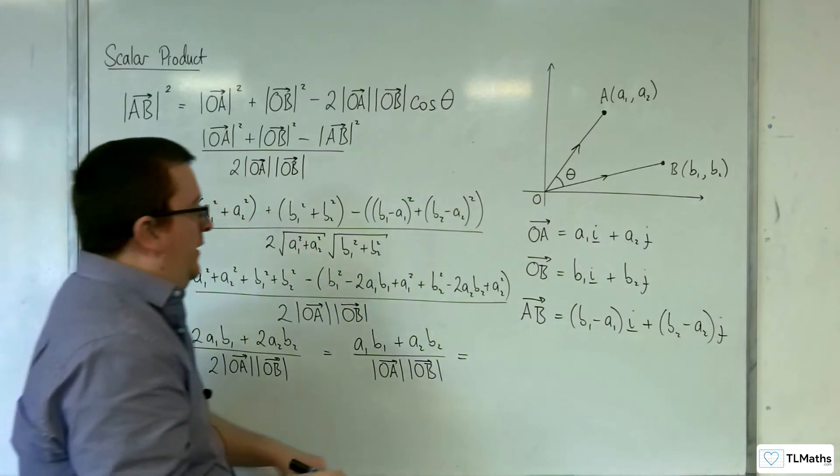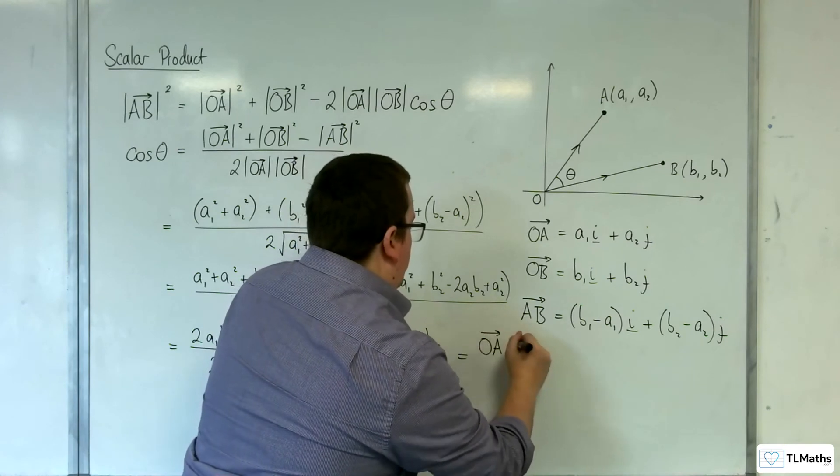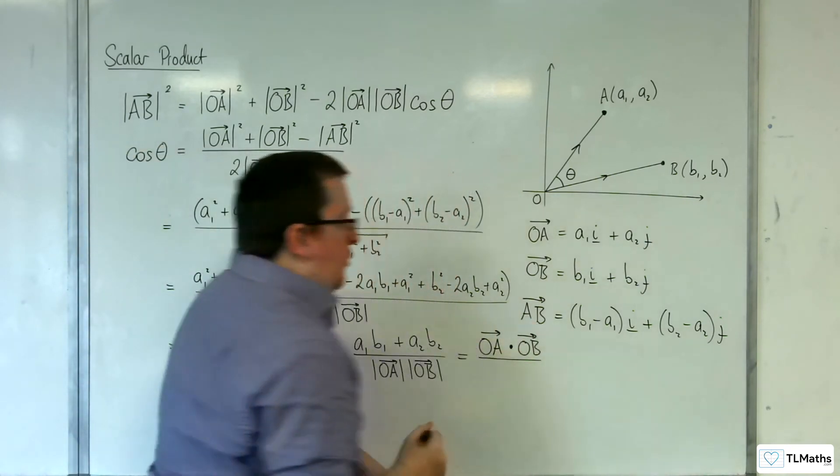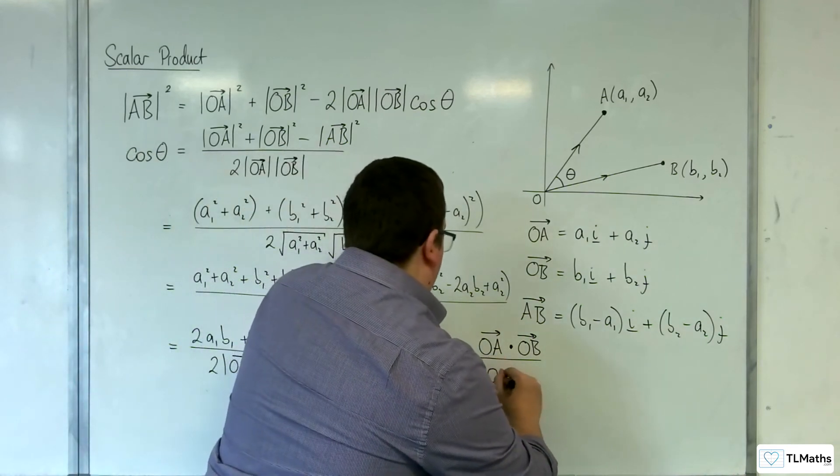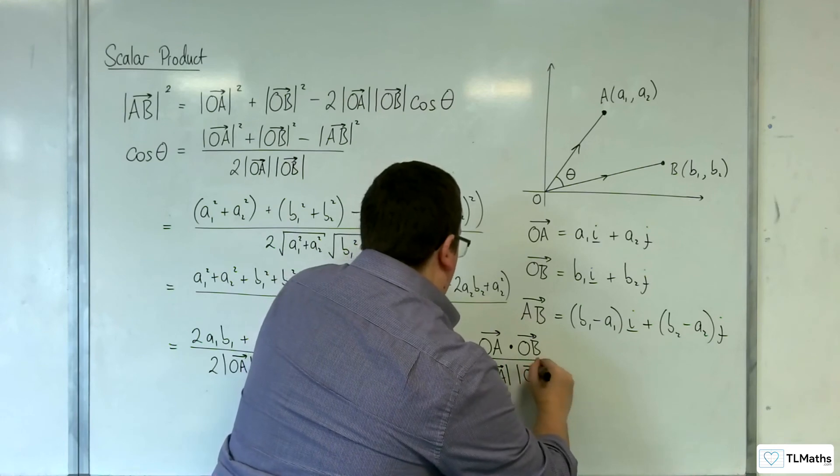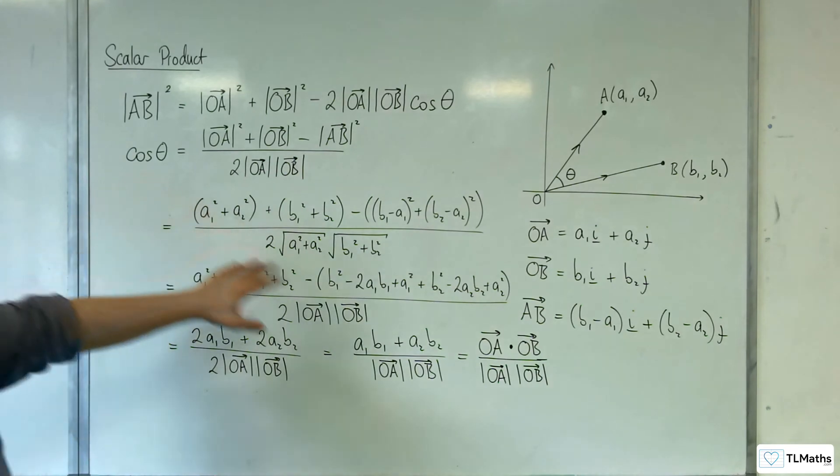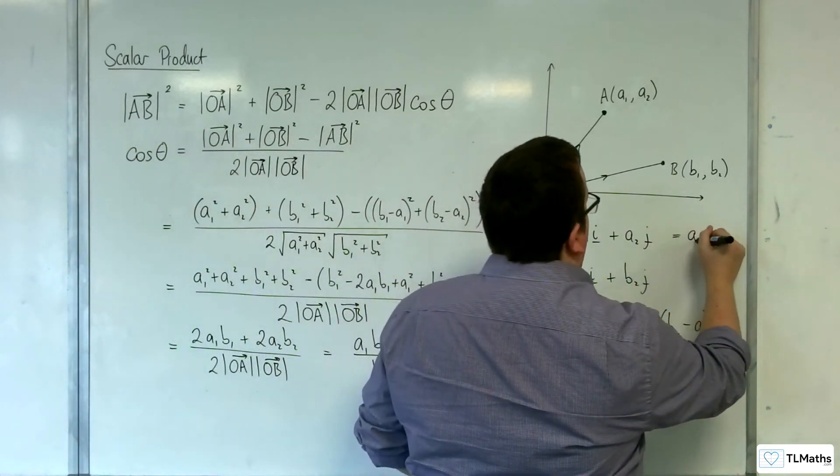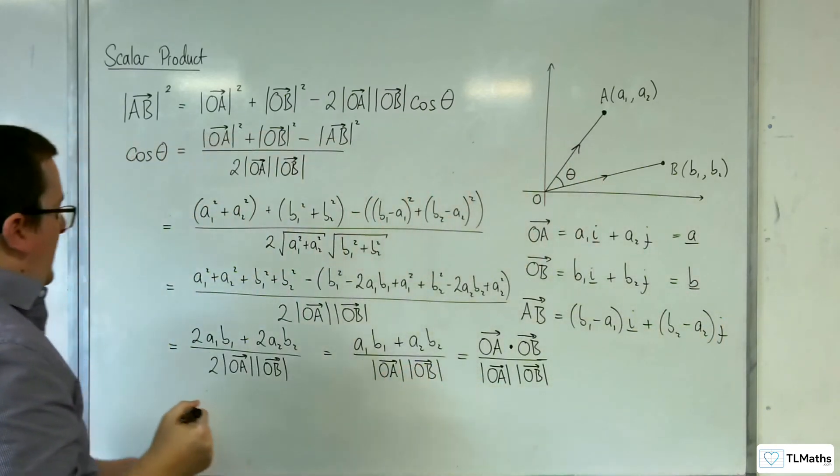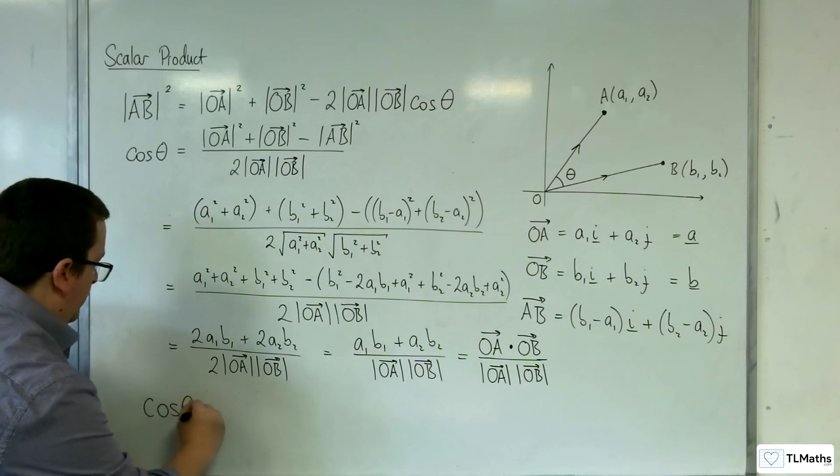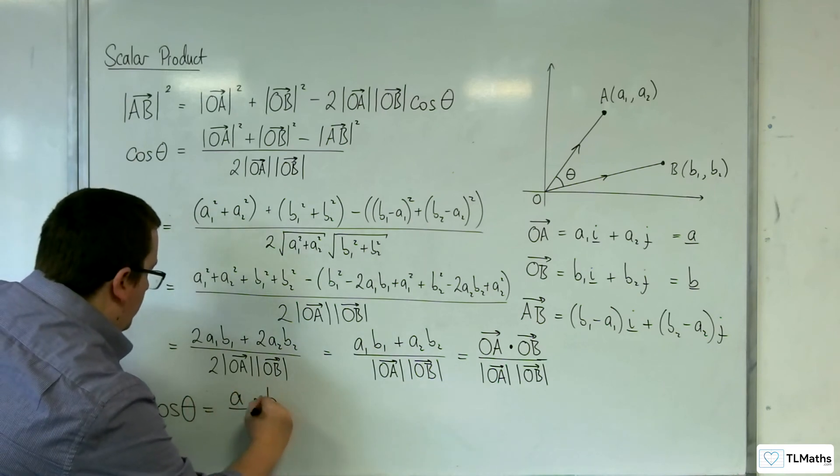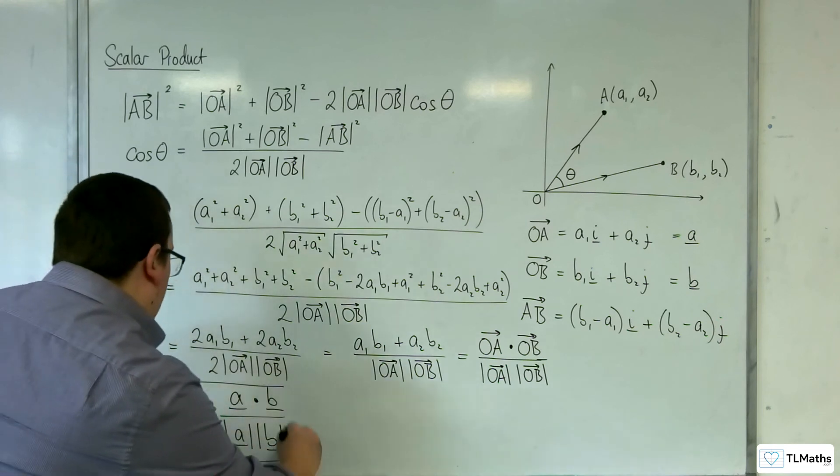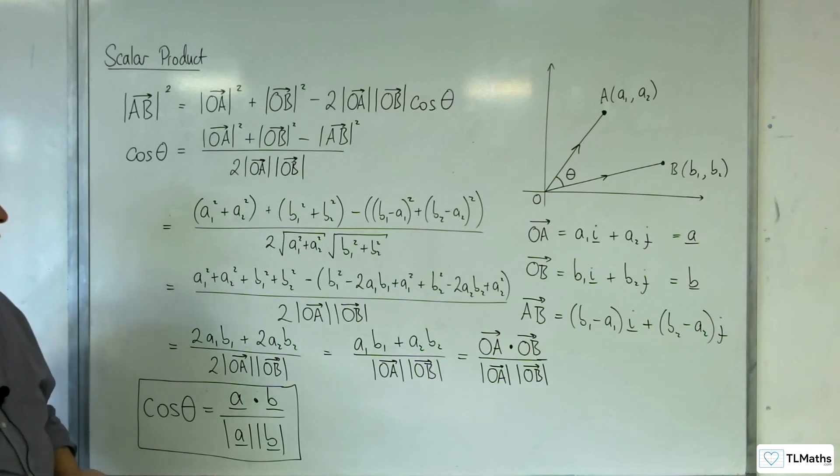So in the notation that we've been using, you would write that as the vector OA and then a dot with OB. It's sometimes referred to as the dot product. Cosine theta is equal to this. Now if we were to use a slightly more abbreviated notation, we could call that the vector A and that the vector B. And if we did that, we could then say cosine theta is equal to A dot B over mod A mod B. And this is the scalar product.